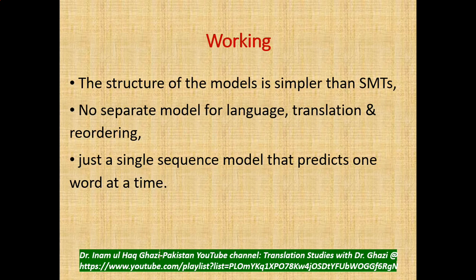The structure of the NMT model is simpler than SMT. No separate model for language, translation, and reordering is needed in neural machine translation, because everything works in an integrated way. A single model based on neural networks can take care of all three things — just a single sequence model that predicts one word at a time.